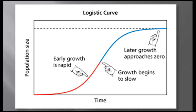It's useful to study population growth in an idealized situation. Idealized situations help us understand the capacity of species to increase and the conditions that may facilitate growth — though most real environments are not ideal. If immigration and emigration are ignored, a population's growth rate equals birth rate minus death rate. Therefore, zero population growth occurs when the birth rate equals the death rate.